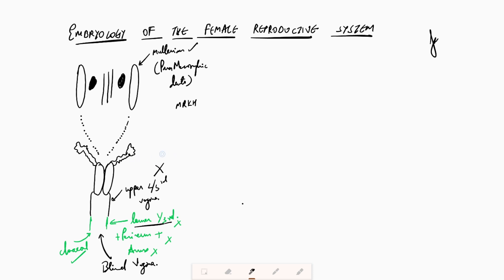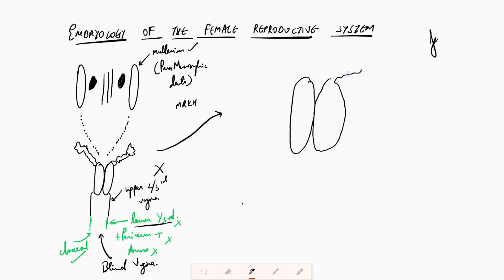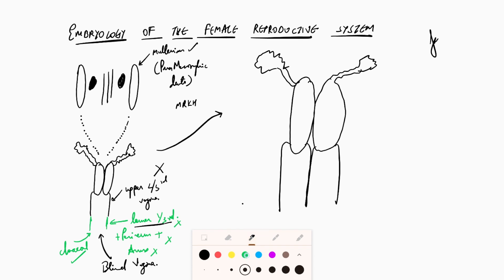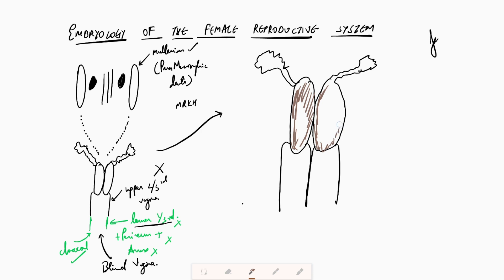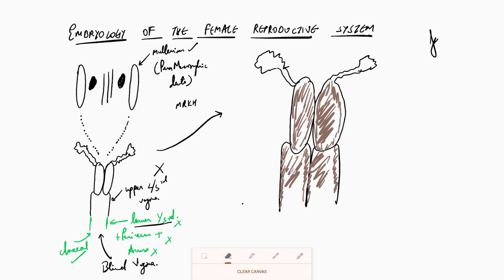All Mullerian anomalies can be understood from this concept. The Mullerian ducts form the uterus and fallopian tubes. Initially, the entire structure — including the upper two-thirds of the vagina — is solid muscle. This muscle then undergoes canalization, and importantly, this is not a simple straight-line process. It is called differential canalization, meaning different parts canalize at different times.